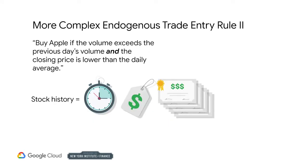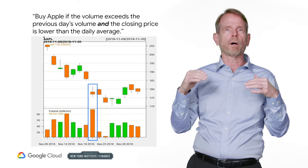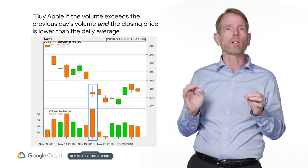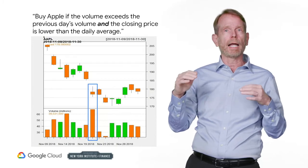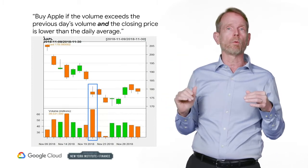Let's look at one more endogenous example. You may say: buy Apple if the volume exceeds the previous day's volume and the closing price is lower than the daily average. You still only need to watch Apple, but you also need to monitor both price and volume. A stock's history consists of price and volume traded. You can see in this graph that your endogenous rule would cause you to buy Apple on November 20th when Apple closed at about $177. Apple subsequently traded as low as $171 before recovering to about $180.